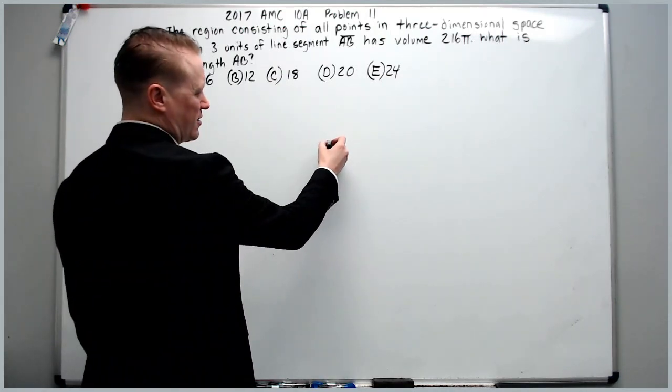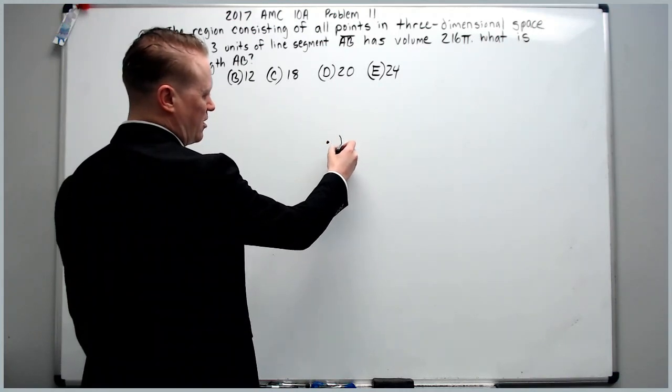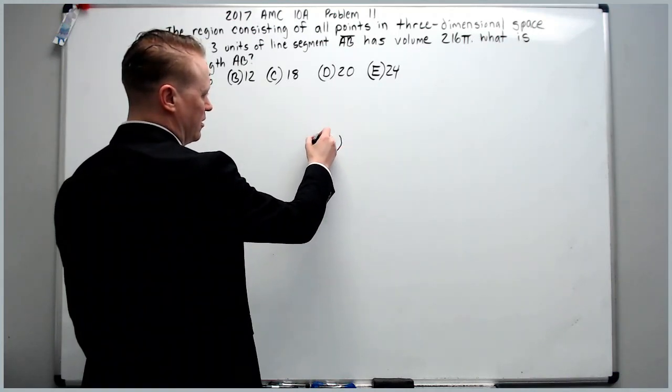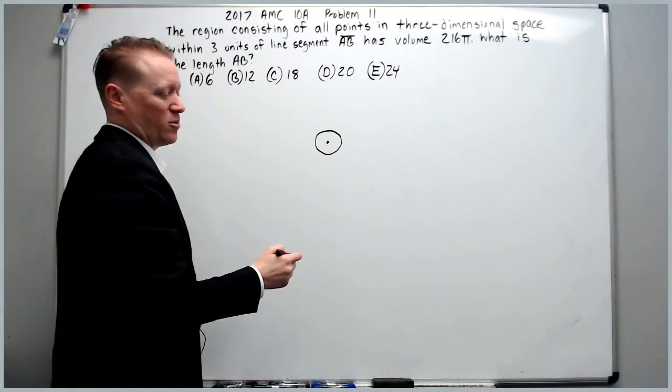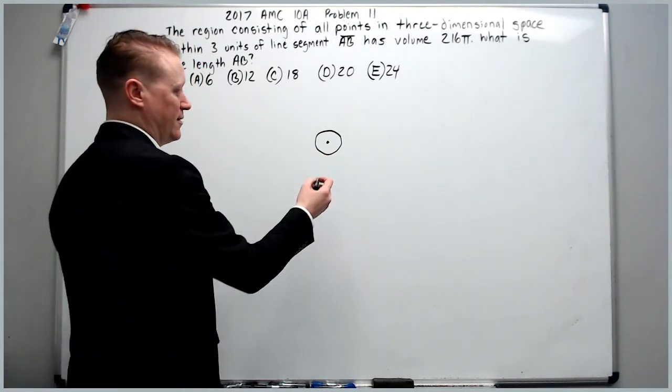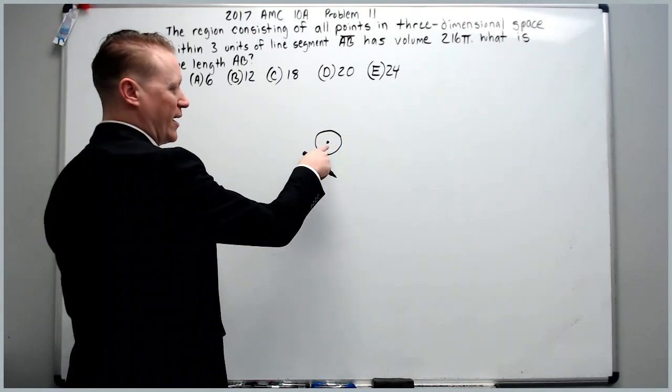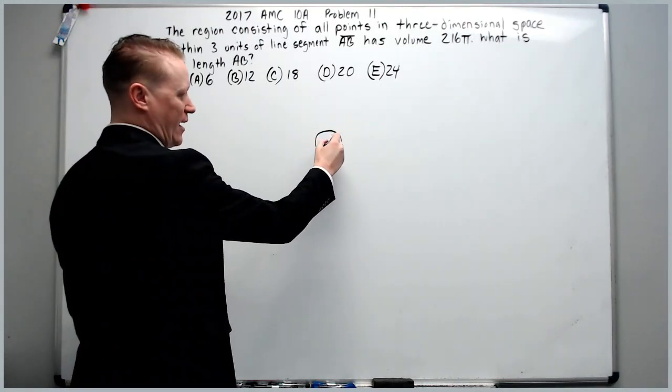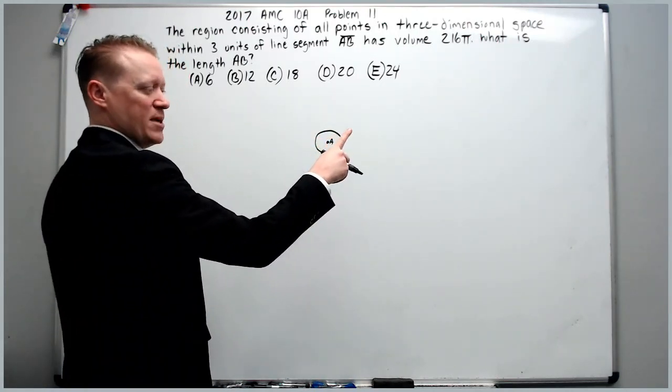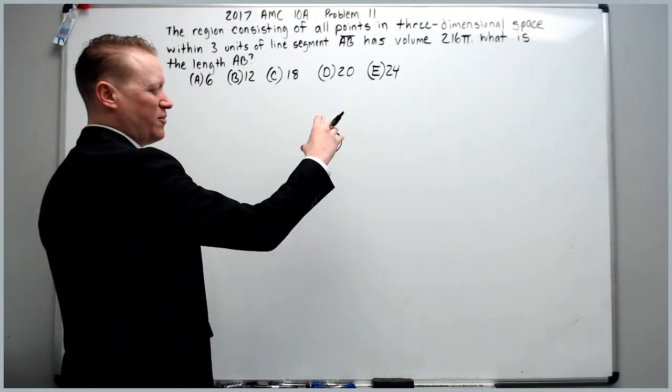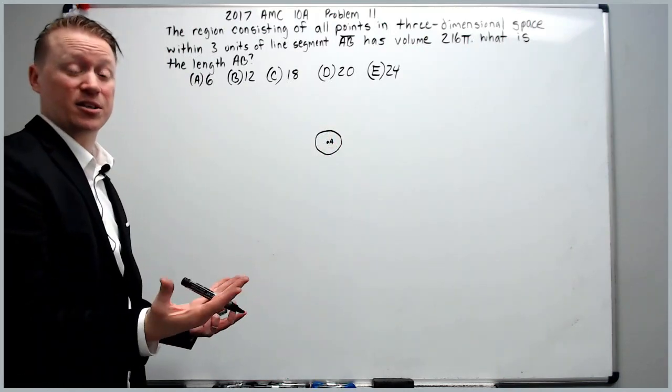If you were within three units of this point, then you would form a circle that has a radius of 3. You can imagine this extending off the board this way. This could be point A, and B would be somewhere out here to give you a cylinder.